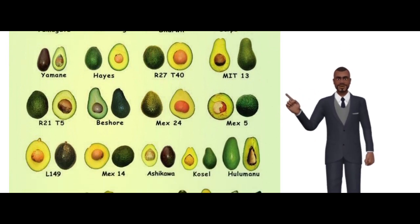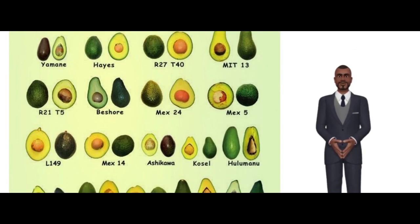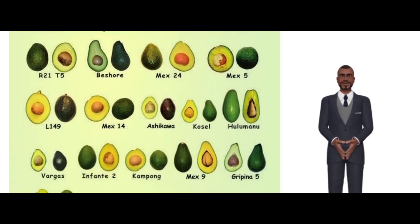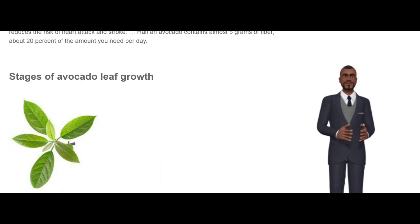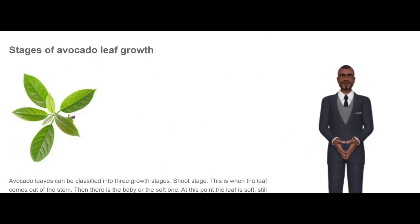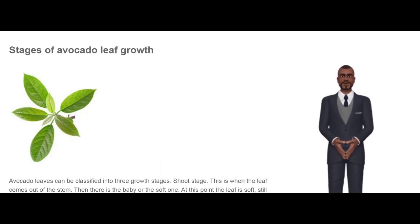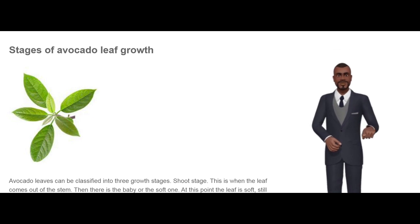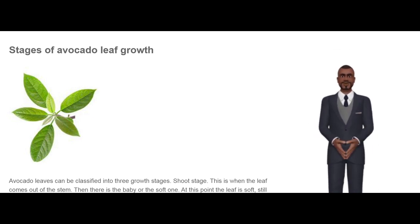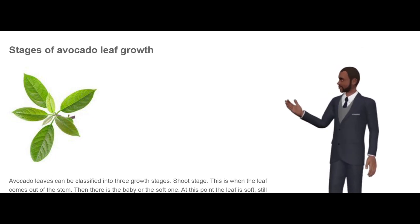Stages of Avocado Leaf Growth. Avocado leaves can be classified into three growth stages. The shoot stage is when the leaf comes out of the stem. Then there is the baby or soft stage — at this point the leaf is soft, still growing, and the color is light green. These soft leaves eat easily with little bitterness.